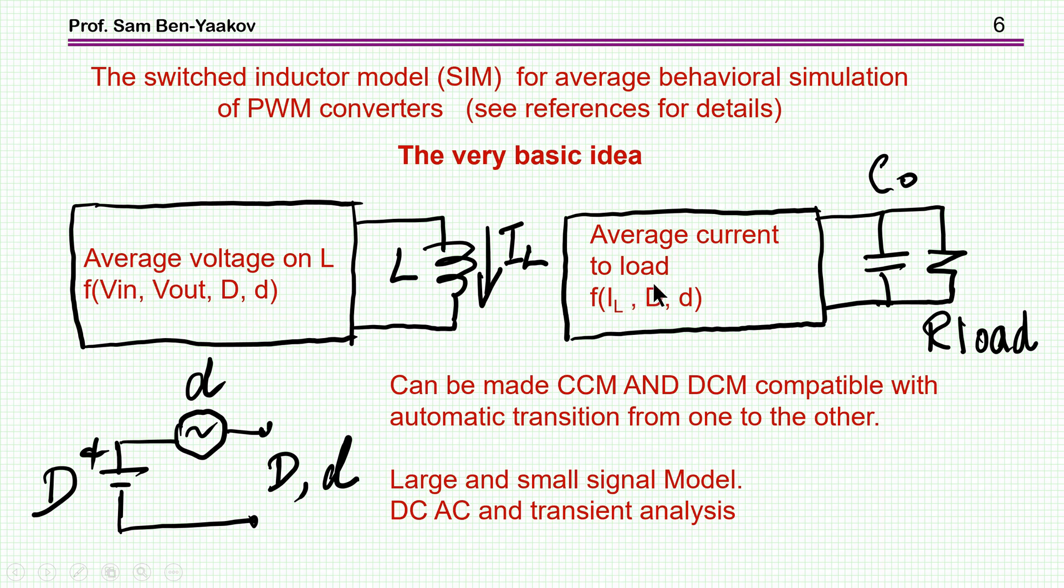Here we have now a current source which is the average current that is going to the load. This is the load, the capacitor and the resistance, and this is a function of the average current inductor. This is this current which is generated by this average voltage, duty cycle and small perturbation. Now the duty cycle is coded into voltage, so the steady state or DC component or the operating point is emulated by a DC voltage source, while the perturbation is an AC voltage source. Now this model can be made CCM and DCM compatible and it has automatic transition from one to the other. And furthermore it is a large and small signal model, that is it can be used for simulation on DC simulation, AC and transient analysis.